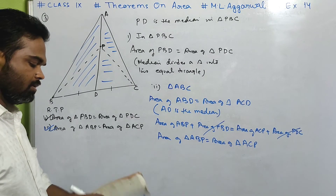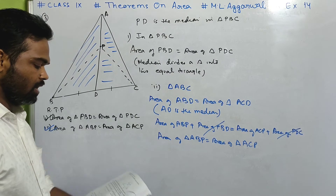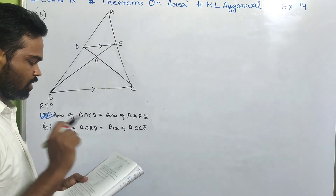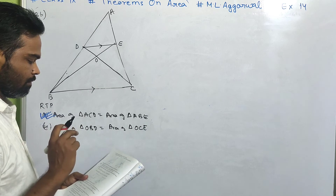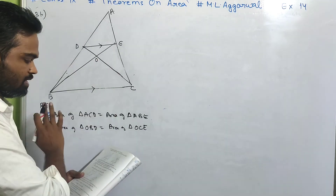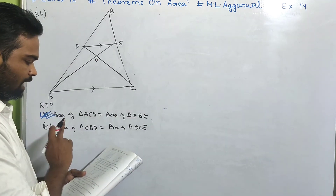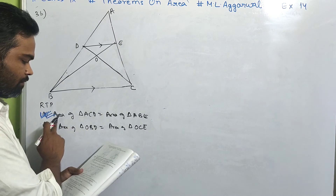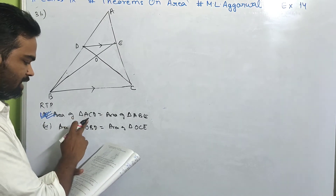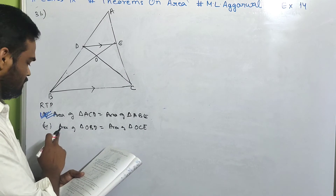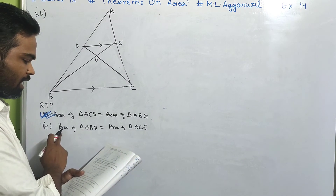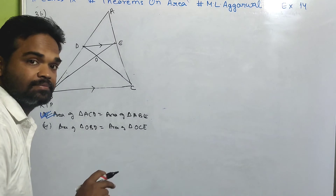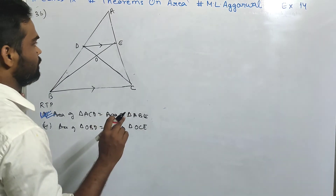Now look at number 3 part B. In the figure, DE is parallel to BC. Then prove that area of triangle ACD equals area of triangle ABE, and area of triangle OBD equals area of triangle OCE.